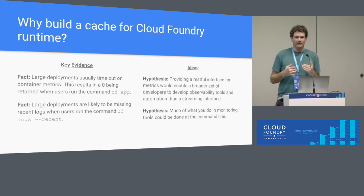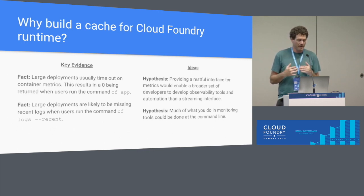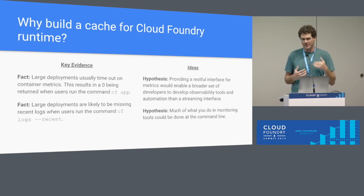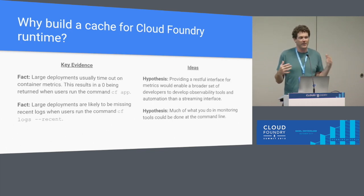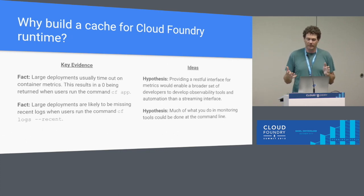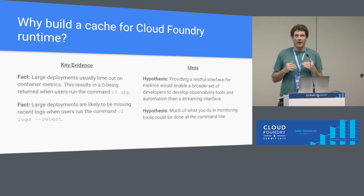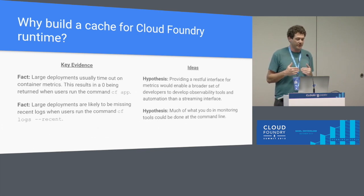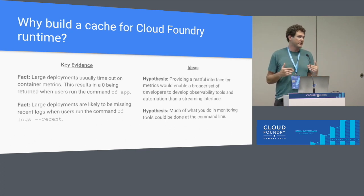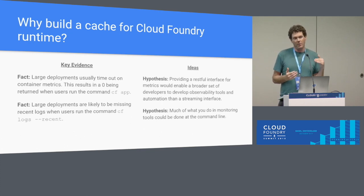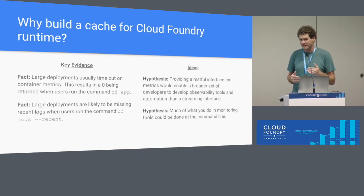The key evidence we had that this problem existed: zero being returned on CF app is the symptom. It's also the case that if you have a large foundation when you run CF logs recent, the chances of missing logs increases with the size of your foundation. We also found, as we started thinking about how to build a new interface to retrieve container metrics, that developers would have an easier time interfacing with the Loggregator system if they had a RESTful interface. The Loggregator system is really based on a push mechanism, and if you've ever developed a nozzle for it, you'll know that managing a push API can be challenging.